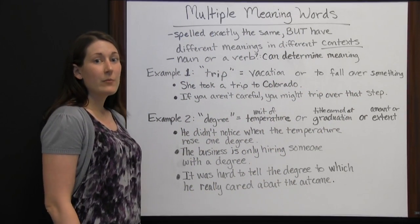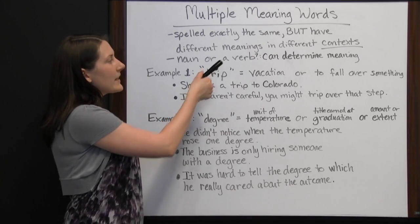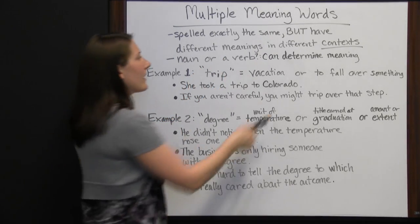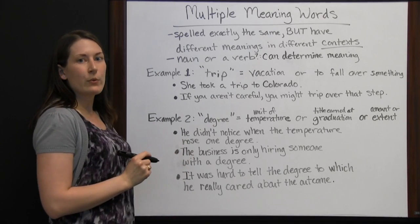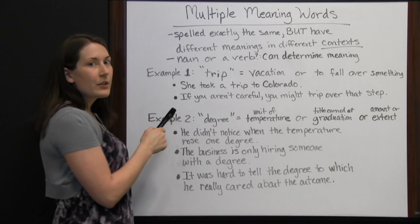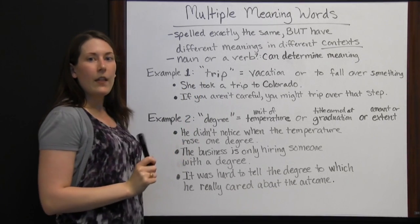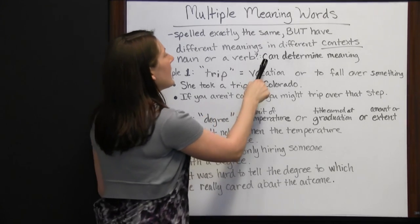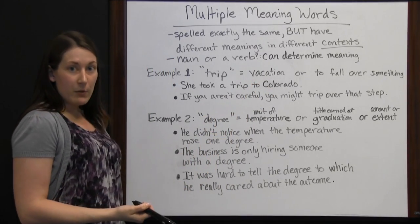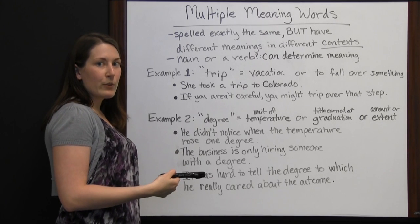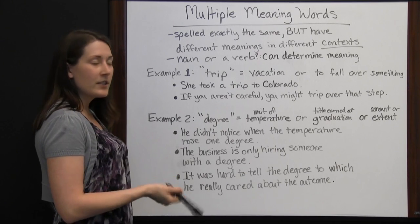Multiple meaning words. Some words are spelled exactly the same but have different meanings in different contexts, so you have to look at context clues to figure out which version of the word you have in your sentence. One way you can do that is by looking to see if the word is a noun or a verb. The grammatical category of the word can determine what the word means, and vice versa.